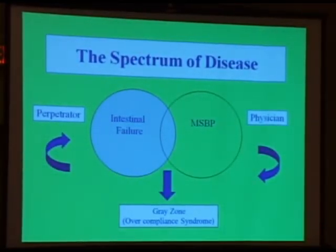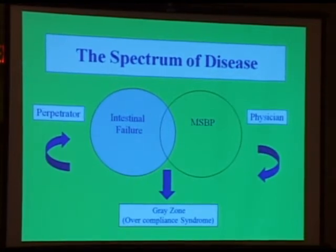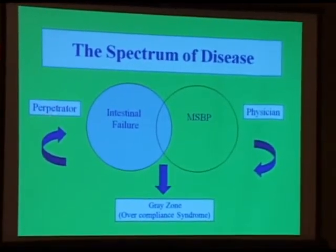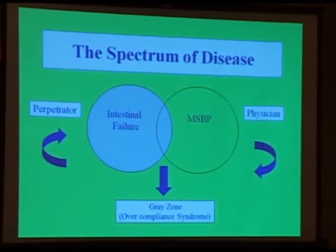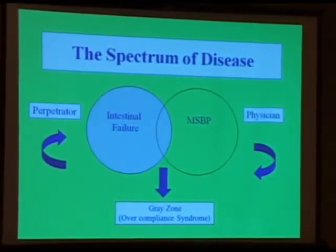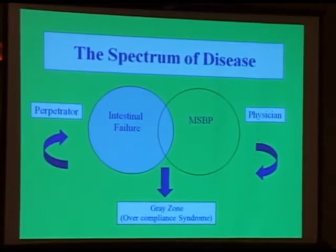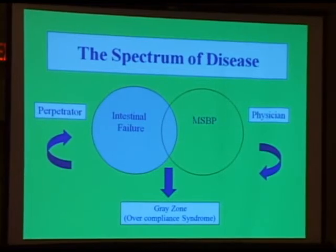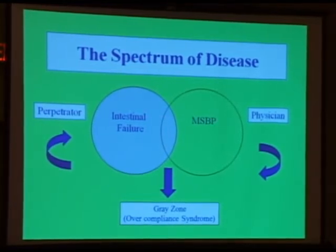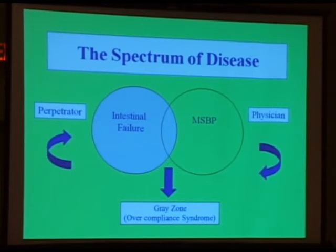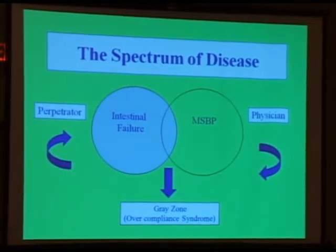This is what I call the spectrum of disease when you have these conditions. In one part of this diagram, you have the perpetrator — the person who is causing or fabricating a medical issue. On the other side, you see the physician, who is always part of this equation. You have patients who have intestinal failure — no question about it — but then there are patients who overlap in what I call the gray zone: the over-compliant syndrome. You can have fabrication, but you can also have people who indeed have the condition but enjoy the milieu of having the disease, becoming over-compliant and over-vigilant.